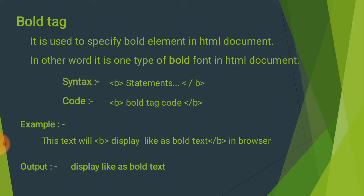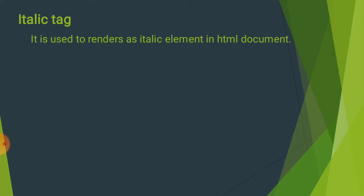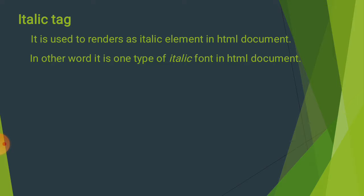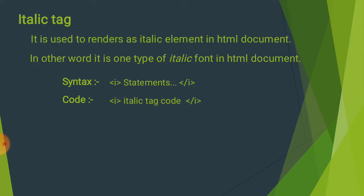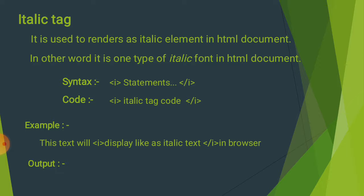Italic Tag (I Tag): It is used to render as an italic element in an HTML document. यह italic type का document में display होता है। In another word, it is one type of italic font in an HTML document. Em Tag और Italic Tag दोनों same काम करते हैं, लेकिन Italic Tag ज्यादा use होता है, Em Tag कम। Syntax: I-Tag, Statement, I-Tag close. Code: Italic Tag open, Italic Tag close.